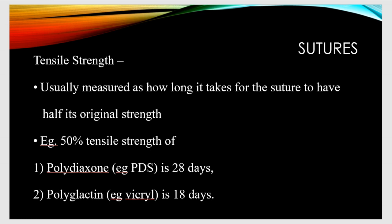These two suture materials are suitable for closure where we need tissue approximation for more than 10 days or 2 weeks in some cases. Polydioxone loses 50% of its tensile strength at 28 days, and Vicryl loses 50% of its tensile strength at 18 days — only 50% remains at those time points.